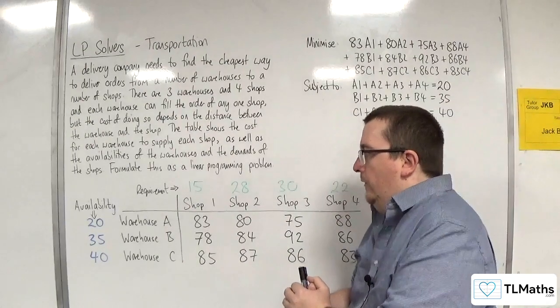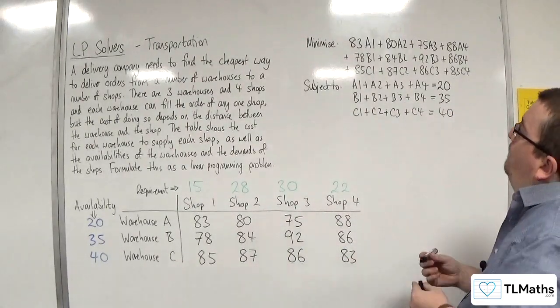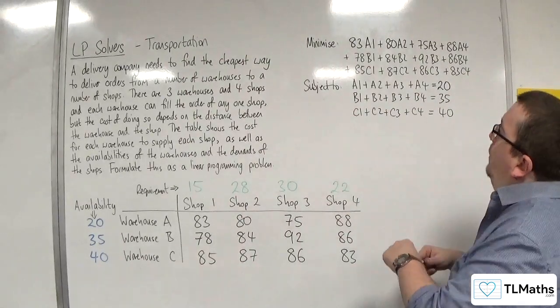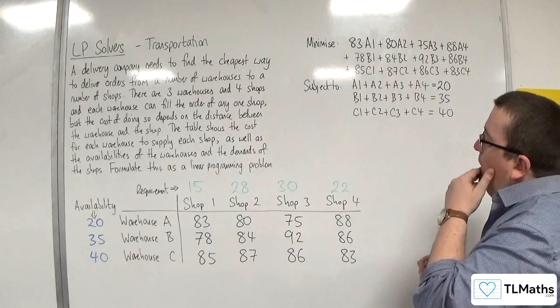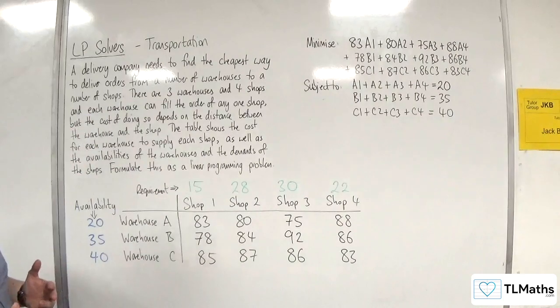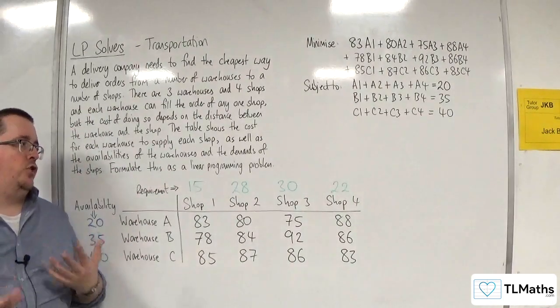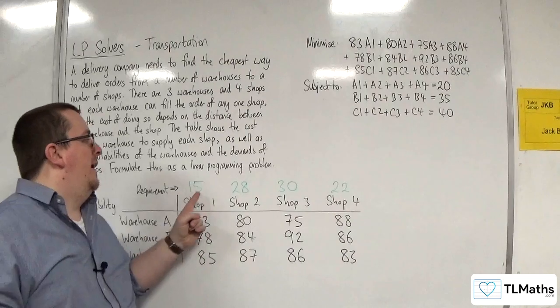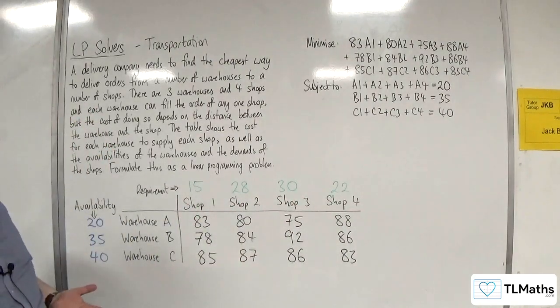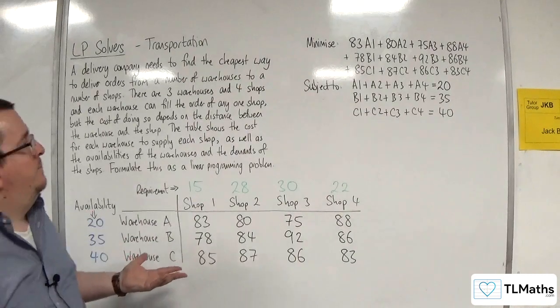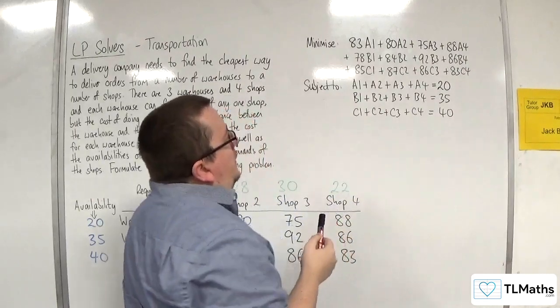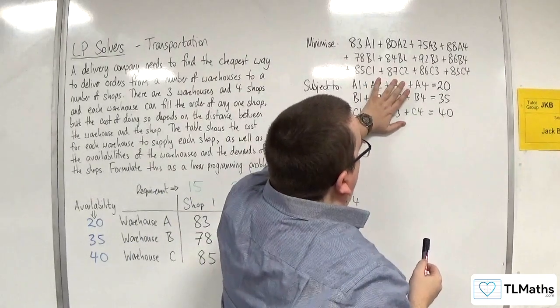So those are the three warehouses. Now those constraints by themselves aren't going to solve the problem because essentially I also need to consider the requirements that each of the shops has. I haven't actually got the requirements down as part of my constraints. Because otherwise what I could end up doing is having A4, B4 and C4 and sending everything to shop four.